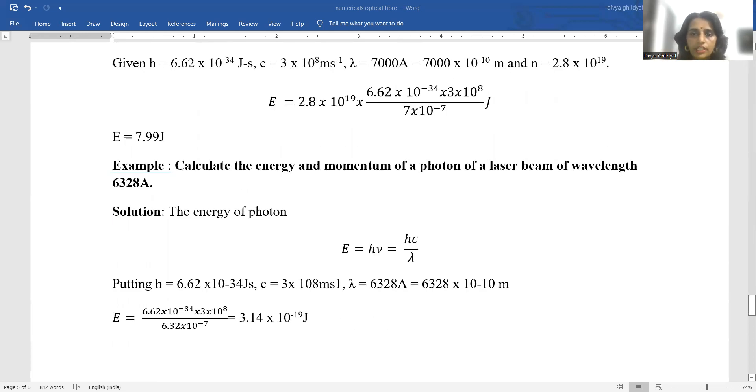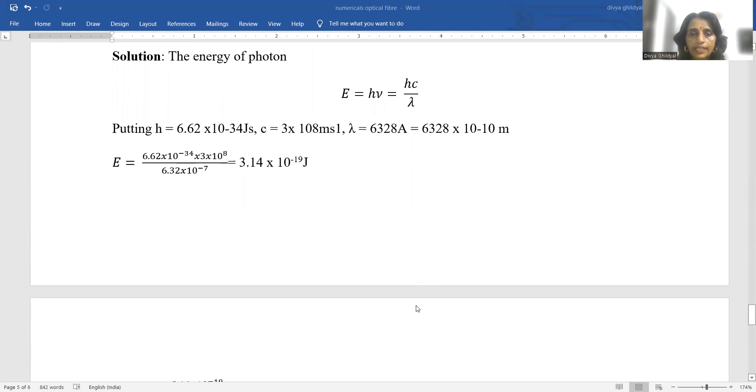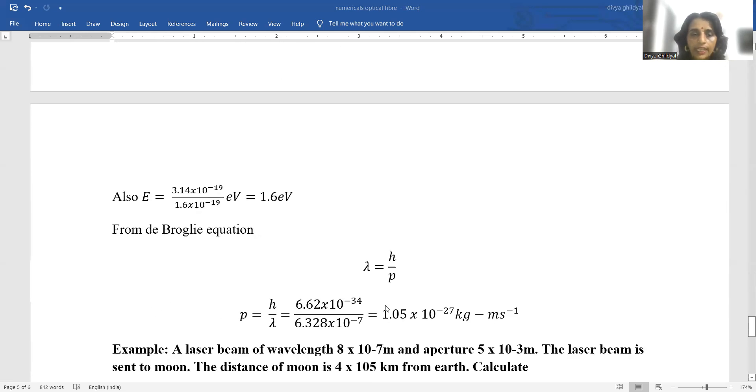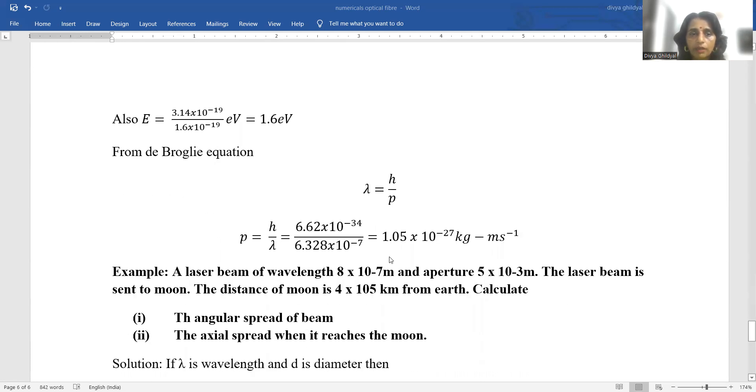Calculate the energy and momentum of a photon of laser beam of wavelength 6328 angstrom. The energy of photon E equals h mu equals hc upon lambda. Putting the numerical values here we get E equal to 3.14 into 10 to the power minus 19 joules. In terms of electron volt I divide it by 1.6 into 10 to the power minus 19, and from de Broglie expression lambda equals h upon p. I put the value of h and I put the value of lambda and I get the answer for p.